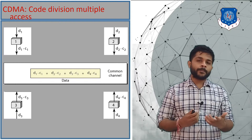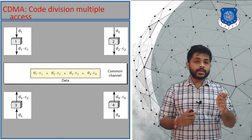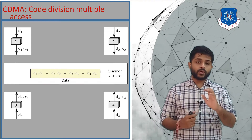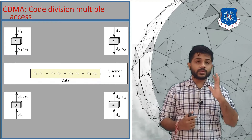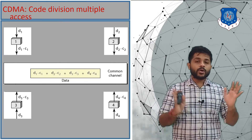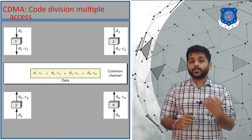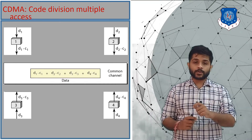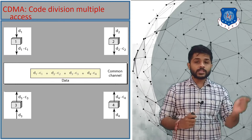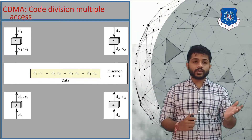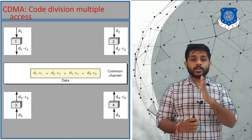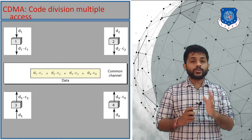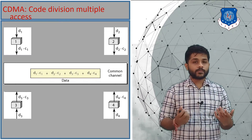For example, if device one sends data D1 encoded with C1, and device four wants to receive D1, it must know C1 and multiply C1 by the received signal. In the channel, all data is present: C1·D1 + C2·D2 + C3·D3 + C4·D4. If you want to receive D3, multiply everything by C3: C1·C3 = 0, C2·C3 = 0, C4·C3 = 0, but C3·C3 = 1, so you receive D3. That is how Code Division Multiple Access works, and this is it for today's session. Thank you.